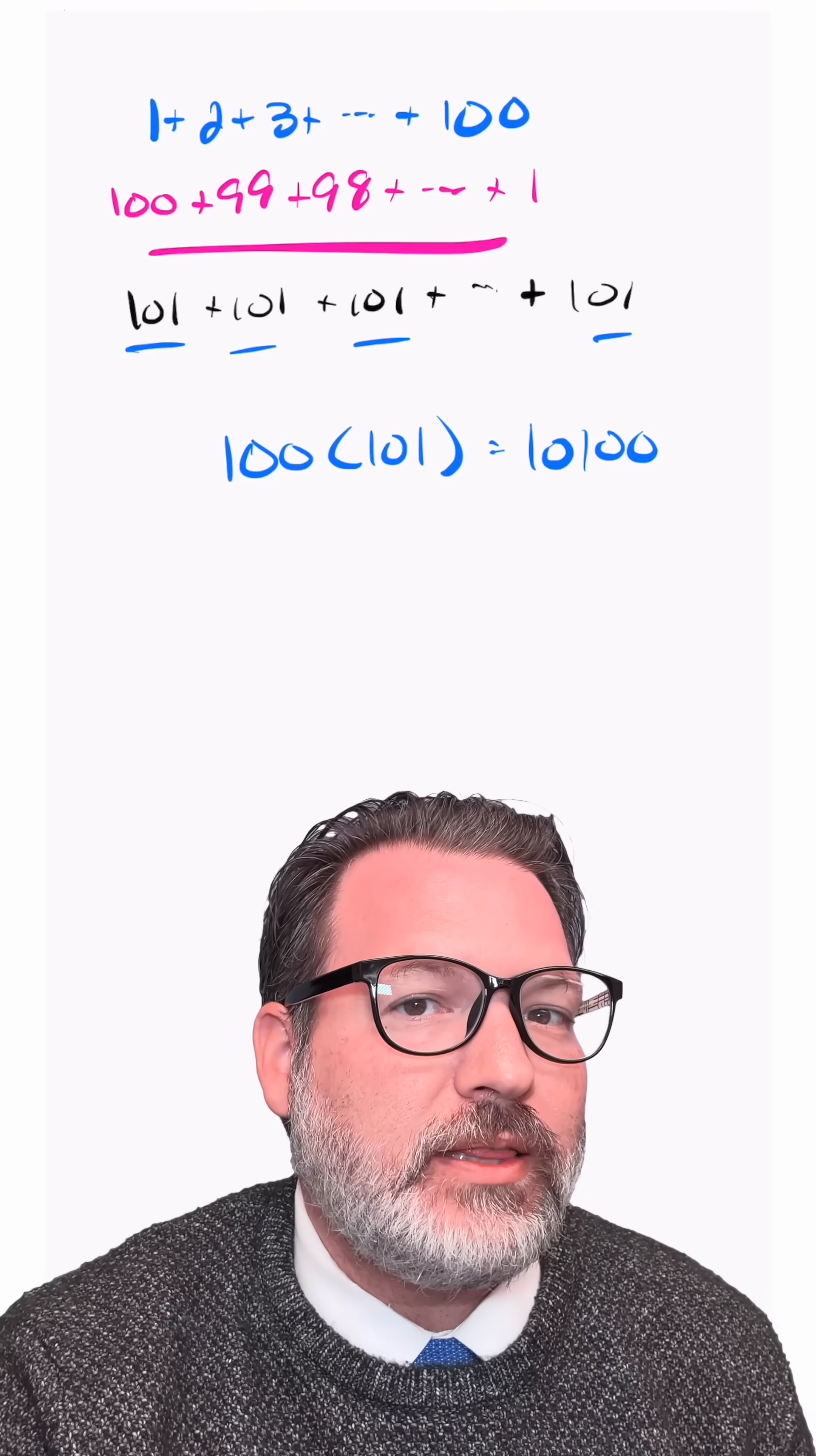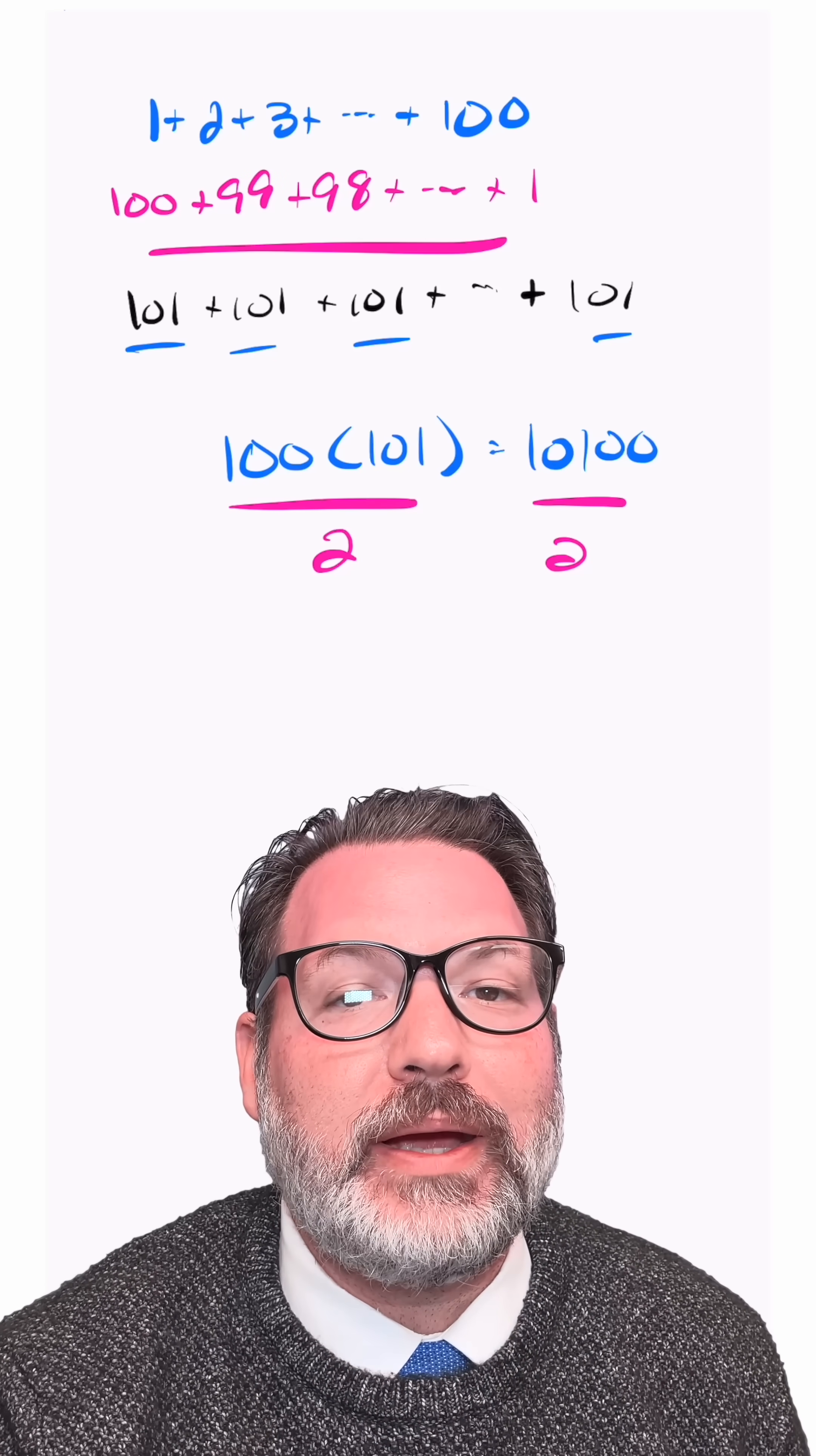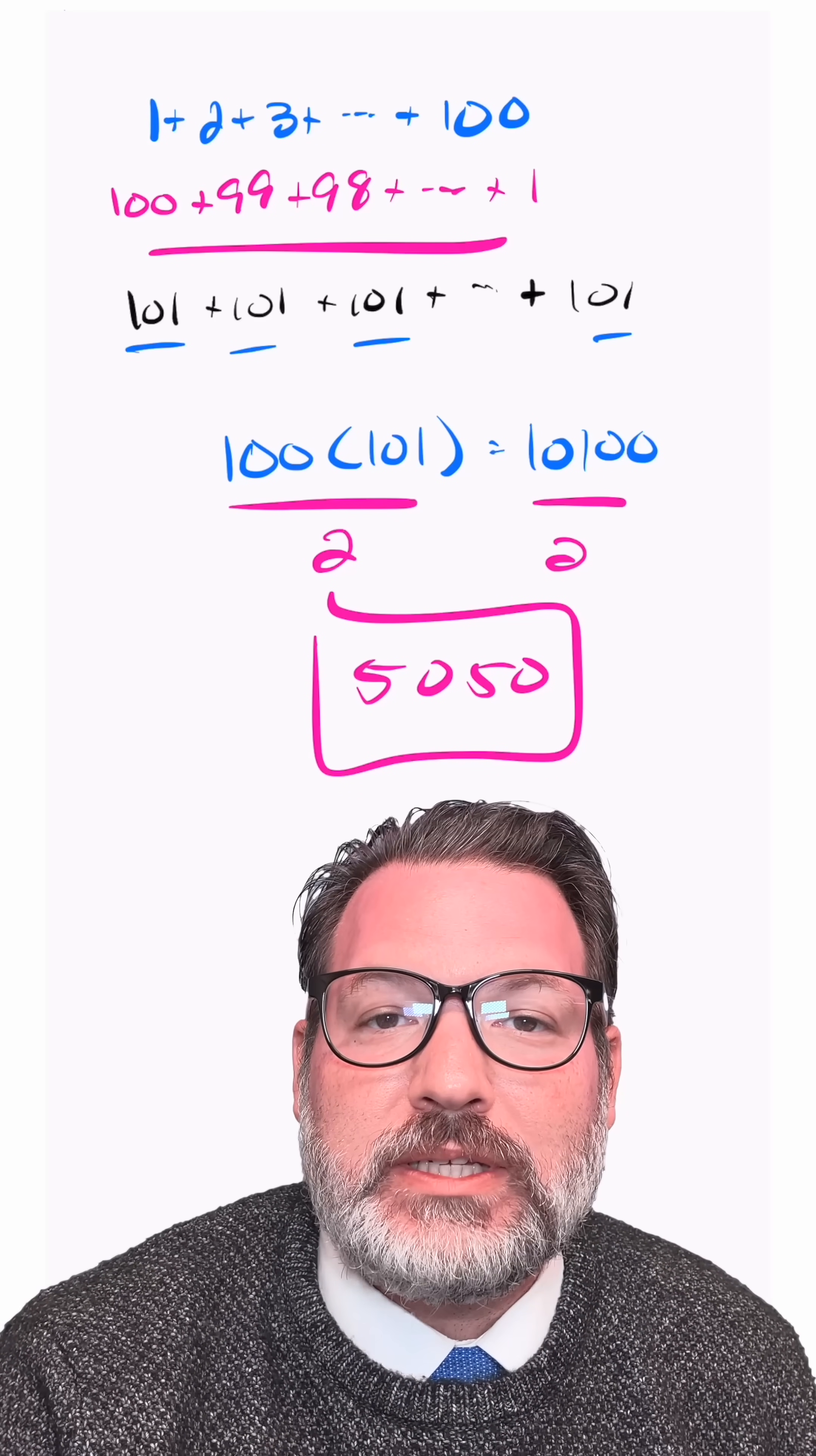Now remember, that was not the actual sum. The sum was 5,050, because Gauss had to bring in a whole second copy of this sequence in order to make this work. So now we're going to have to take this result, 10,100, and divide it by 2. The result of that division, 5,050, is our actual sum for the integers 1 to 100, courtesy of Gauss, who probably was tired of his teacher yapping.